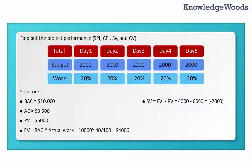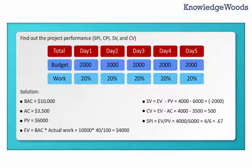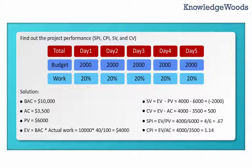Cost Variance: CV equals EV minus AC equals $4,000 minus $3,500 equals $500. Schedule Performance Index: SPI equals EV divided by PV equals $4,000 divided by $6,000 equals 0.67. Cost Performance Index: CPI equals EV divided by AC equals $4,000 divided by $3,500 equals 1.14.